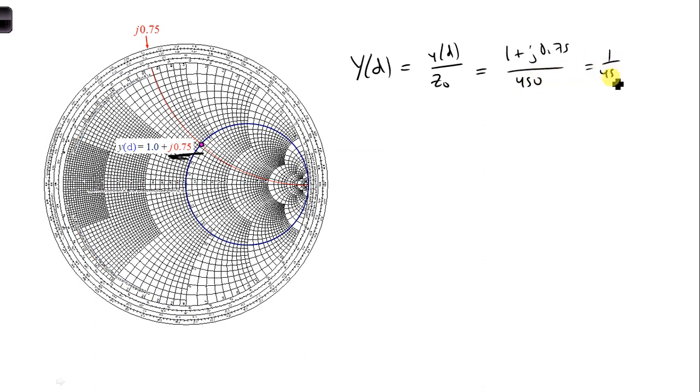And we get some real part, which we're not going to be concerned about, plus J 0.0017. The actual physical value we need to cancel is 0.0017.